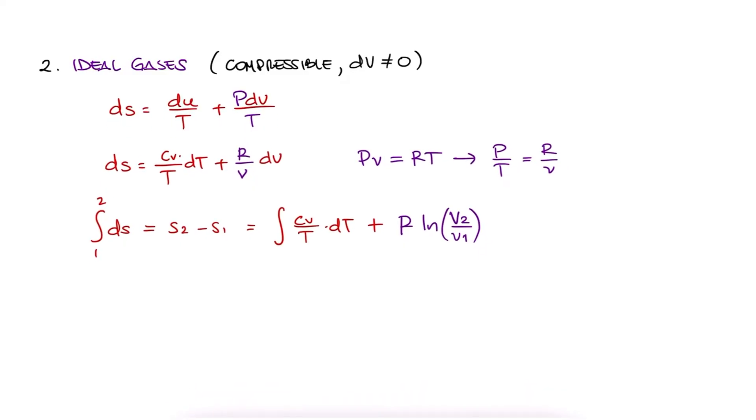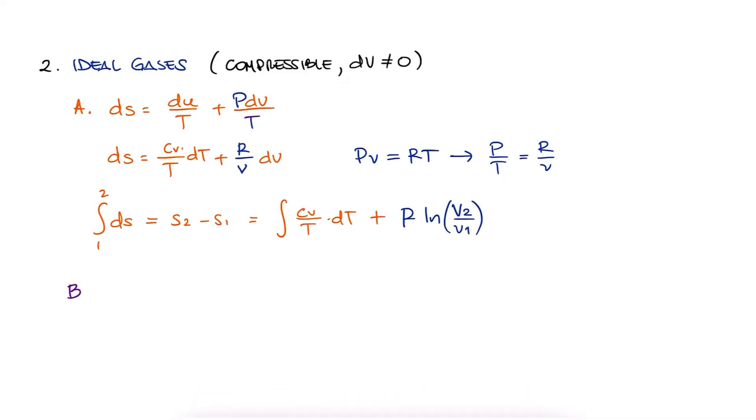If we do the same with the second expression, ds equals dh over T minus v over T dp, since dh is now cp dT instead of cv dT, and v over T is R over P, we end up with a very similar expression, except for that specific heat and the natural log of pressures instead of volumes.